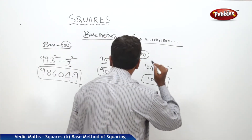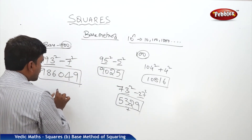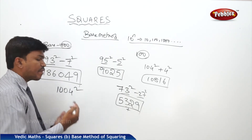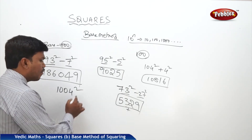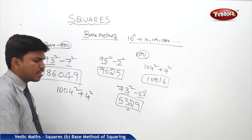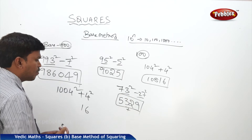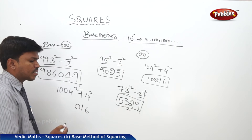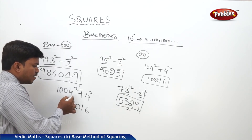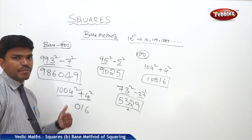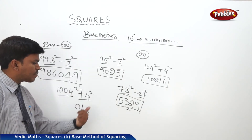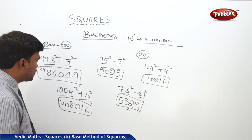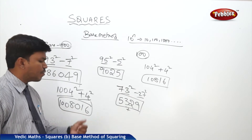One more example for base 1000. I need 1004 square. Compare with the base 1000 — it is more by 4. What is 4 square? 16. Write 016 on the right side since we need 3 digits. And 1004 plus 4 is 1008. So your answer is 1008016.